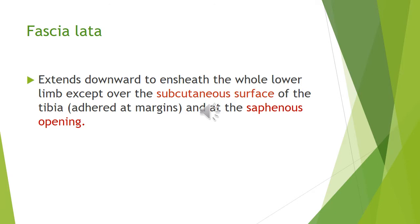However, there are deficient places in fascia lata. One deficient area is the anteromedial border of the tibia, which is called the subcutaneous surface. It is attached to the fascia of the anteromedial border of the tibia. This is the skin and superficial fascia. This is the saphenous area of the tibia.